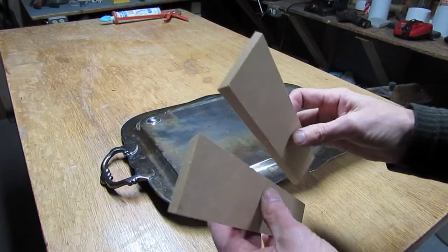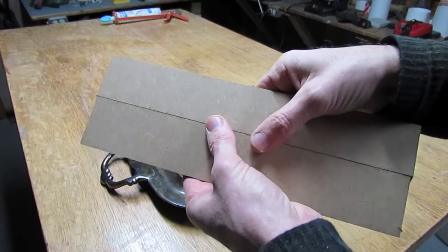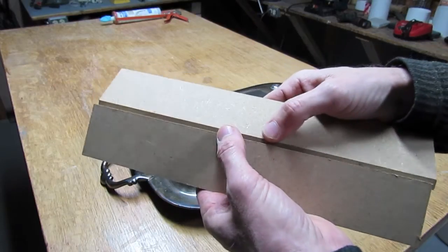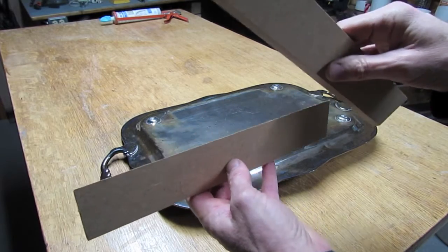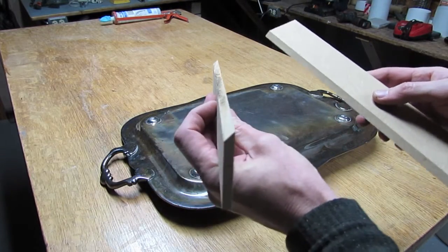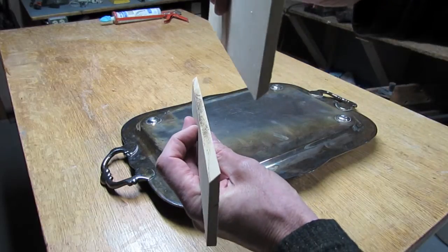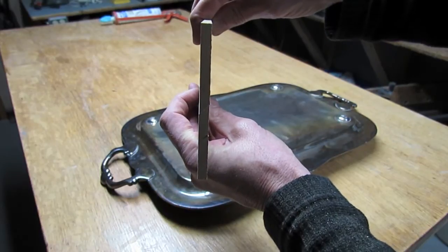So here we have our quarter inch masonite pieces of wood cut. We've taken a four inch piece of wood and cut it in two at a 45 degree angle. We're going to put one piece on the wall and one piece on the tray. This piece is on the wall and this is going to be on the back of the tray. When we go to put the tray on the wall, this will just hook up to it like that.